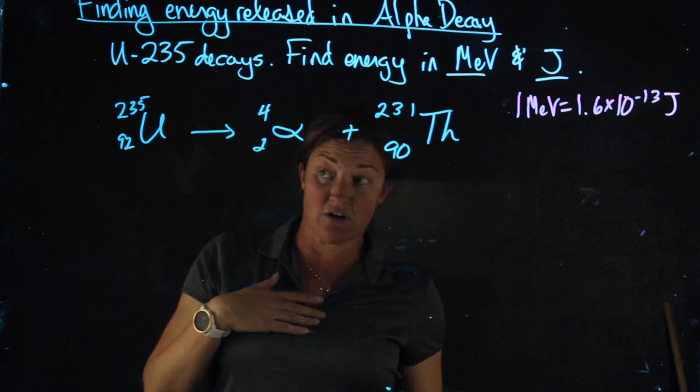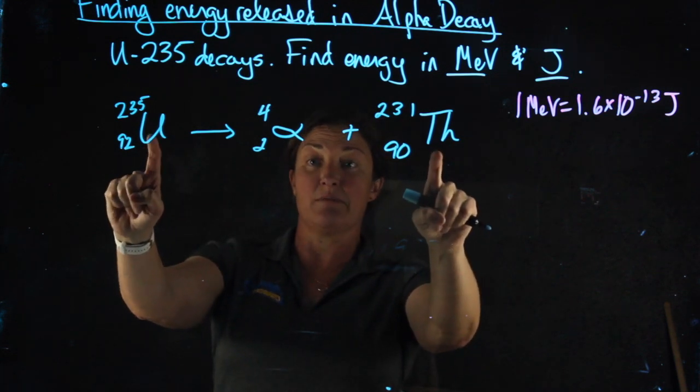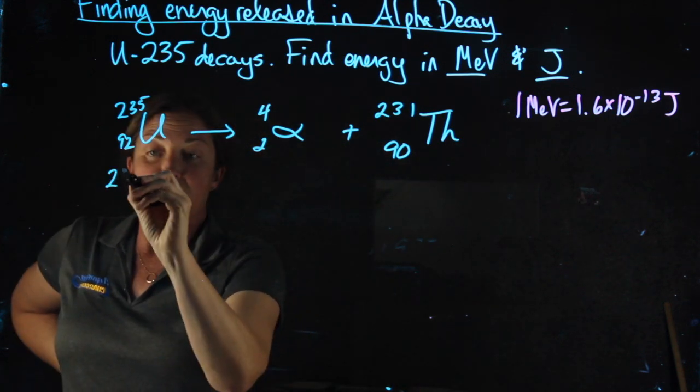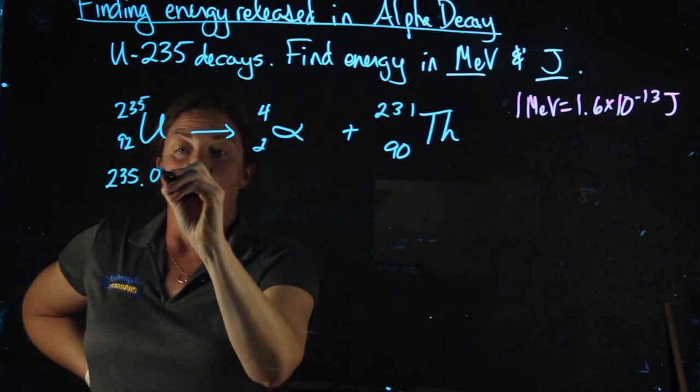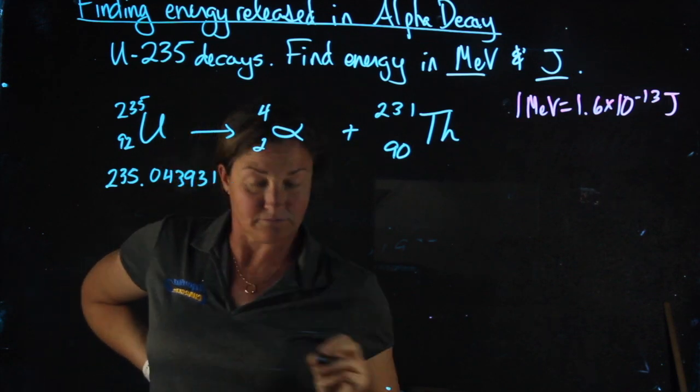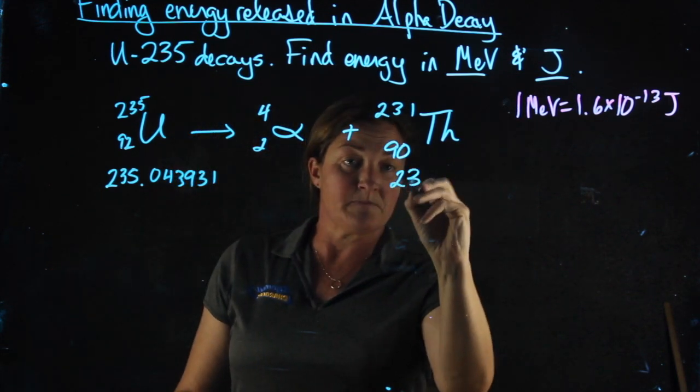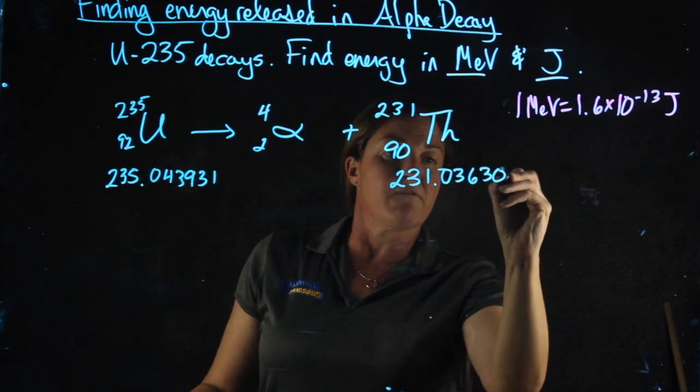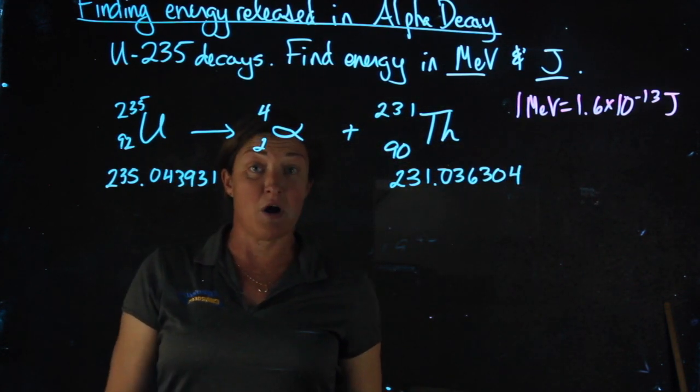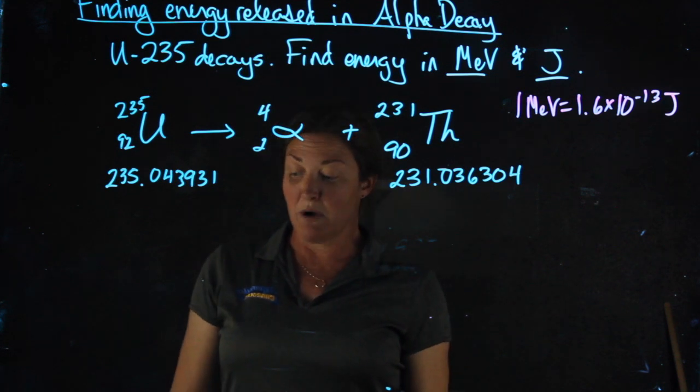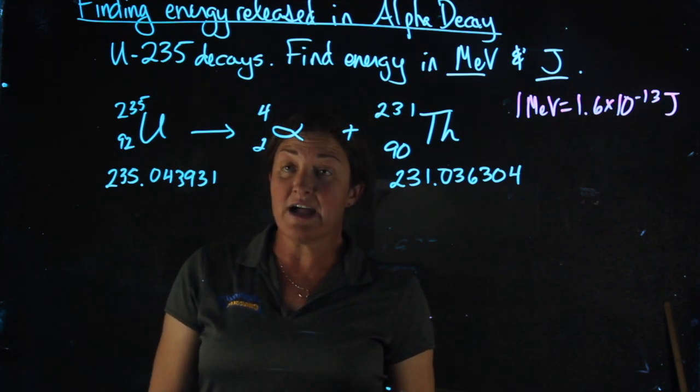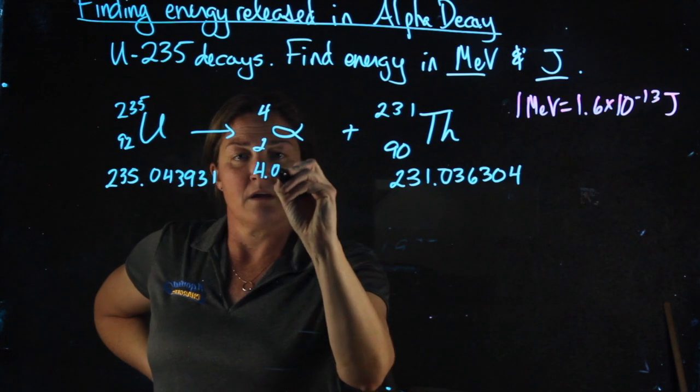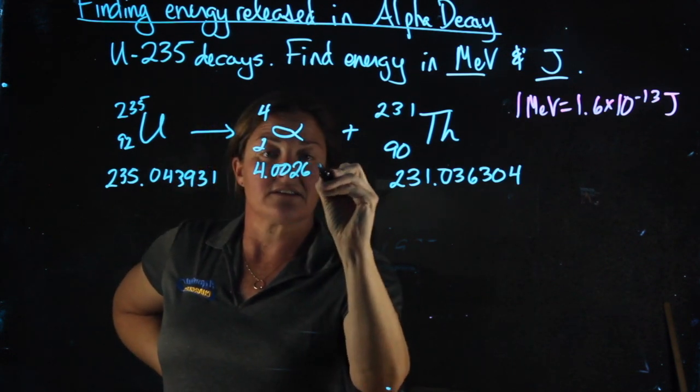We have masses for each one of these particles. I gave you the mass of these nuclei in the problem statement. The mass of uranium-235 nucleus is 235.043931. The mass of the thorium nucleus is 231.036304. And the mass of the alpha particle is the same as the mass of the helium nucleus, which is both on your sheet, which gives you the mass of light nuclides, and is at the top of the paper, 4.002603.